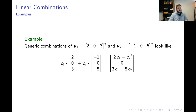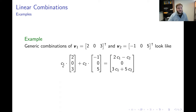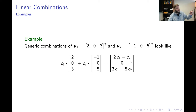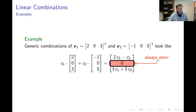Let's look at another example. I'm taking a general linear combination of the vector (2, 0, 3) and the vector (negative 1, 0, 5), keeping the first weight c1 and the second weight c2 general. When I do the arithmetic, I produce a new vector with three coordinates. The first coordinate is 2c1 minus c2, the third coordinate is 3c1 plus 5c2. But the second coordinate of both vectors is 0, so no matter what I put in for c1 and c2, the second coordinate is always 0.